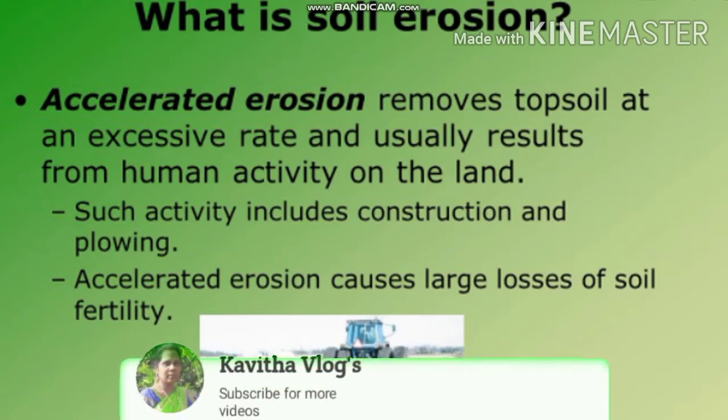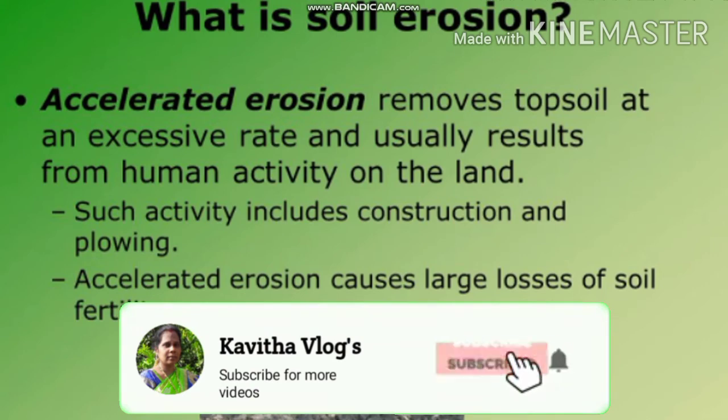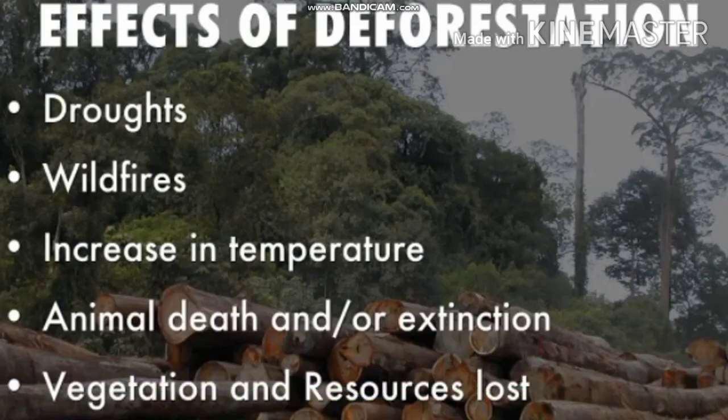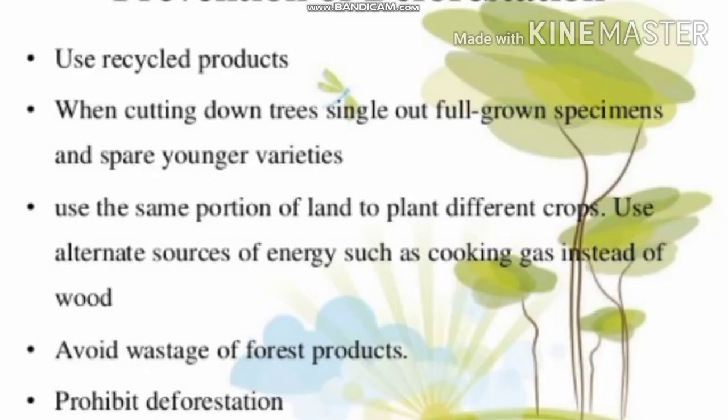Such activity includes construction and plowing. Accelerated erosion causes large losses of soil fertility. Effects of deforestation include drought, wildfires, increase in temperature, animal death, and loss of vegetation and resources.